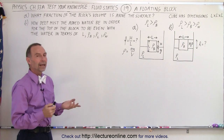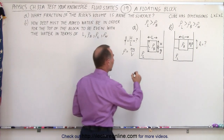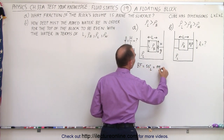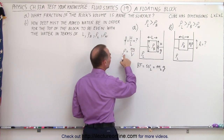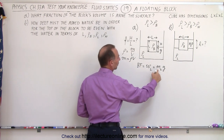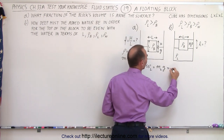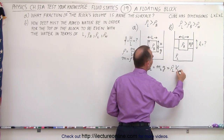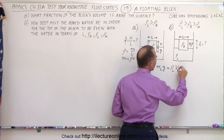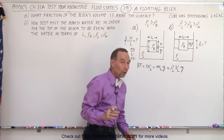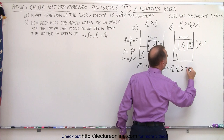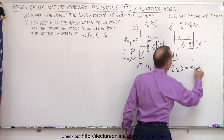For Part A, we're going to use the concept of the buoyancy force. We know that the buoyancy force is equal to the weight of the displaced liquid, which equals the mass of the liquid times g. Since density equals mass over volume, mass equals density times volume, so we replace the mass of the liquid by the density of the liquid times the volume of the displaced liquid — not the total volume of the block, but just the submerged volume — times g. That buoyancy force equals the weight of the block, the mg of the block.